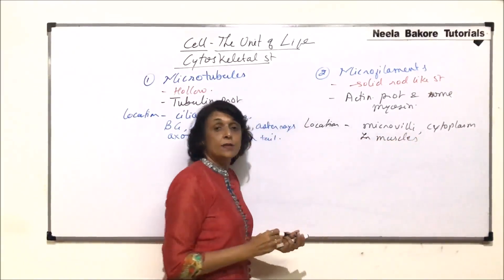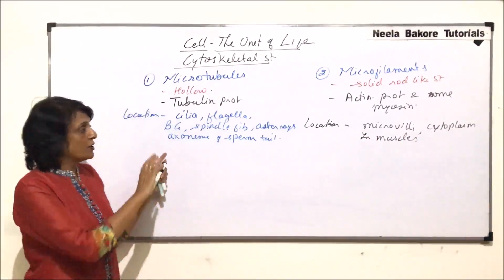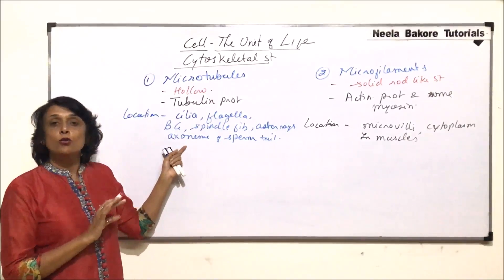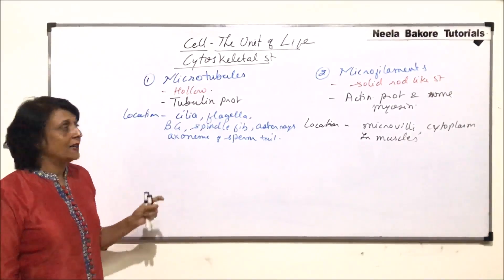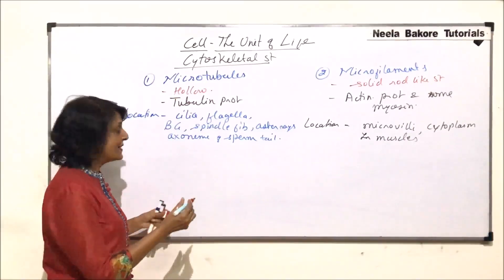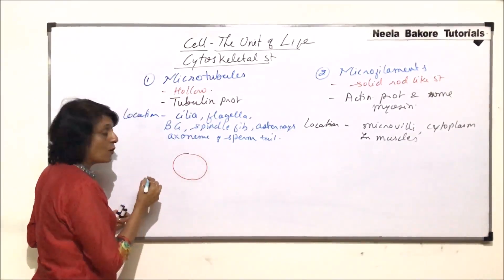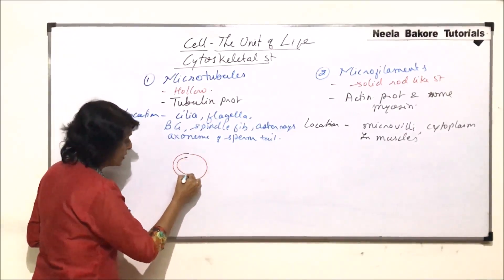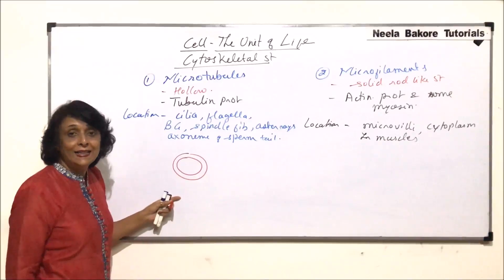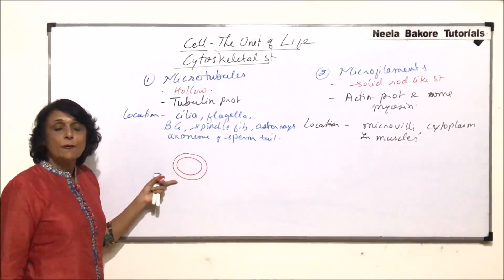Microfilaments are also found in the cytoplasm, especially in areas where pseudopodia are formed, and in muscles — where both actin and myosin filaments are found. Now let us talk about the microtubule in detail. It is a hollow pipe-like structure, so when we take a cross-section we see that it has a wall.